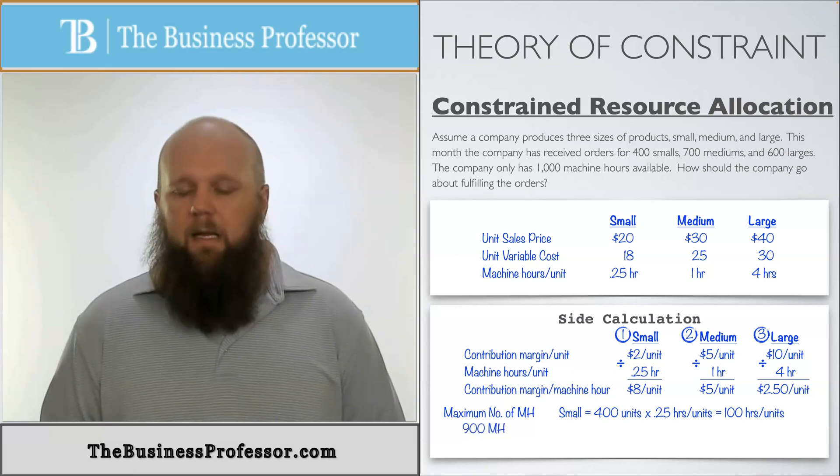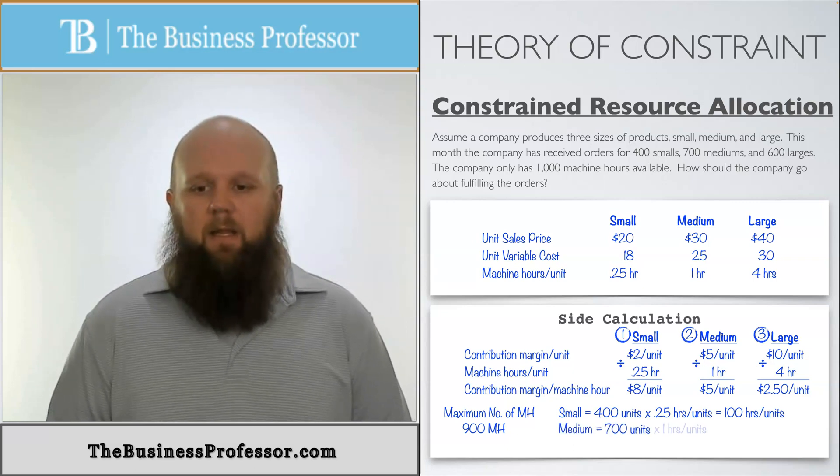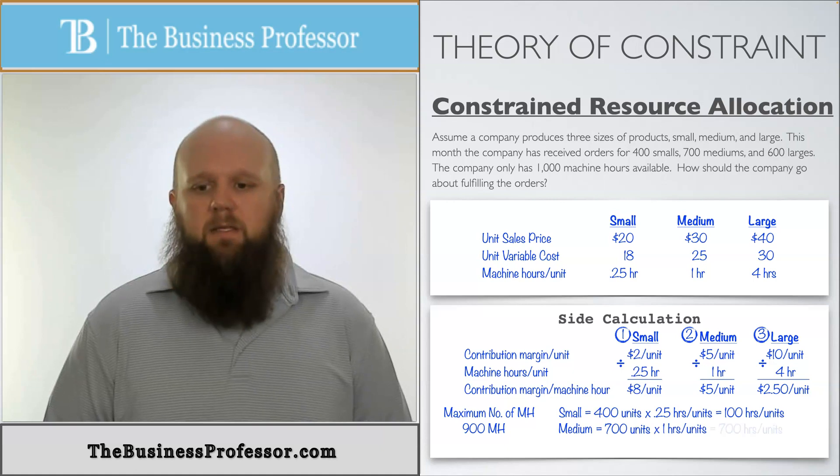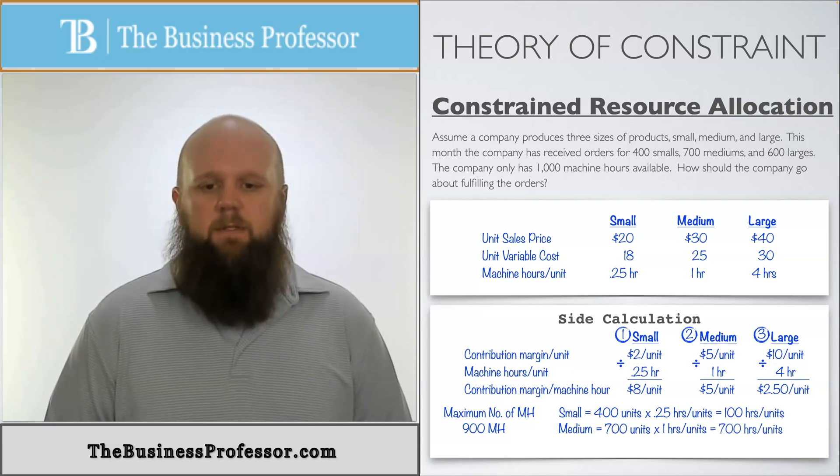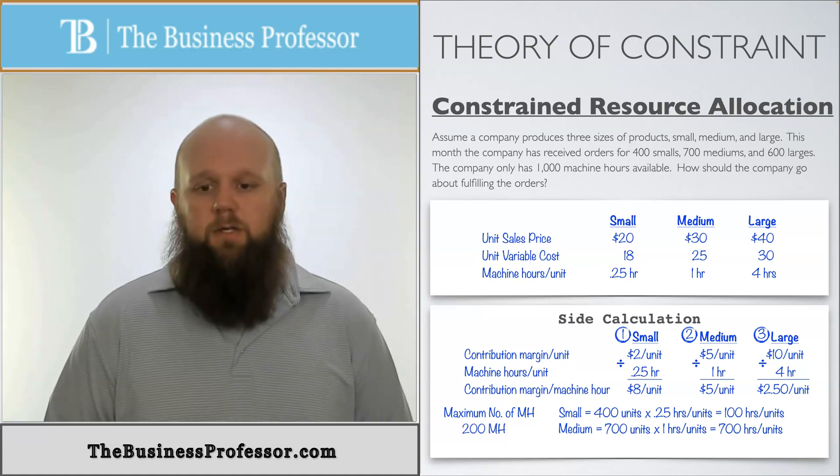Then I move into the second one, which is the mediums. The medium, I have an order of 700 mediums. Multiply that by the one hour per unit. And that's going to give me 700 total hours. If I take that away from the 900, that means that I have 200 hours left to use to dedicate for the larges.